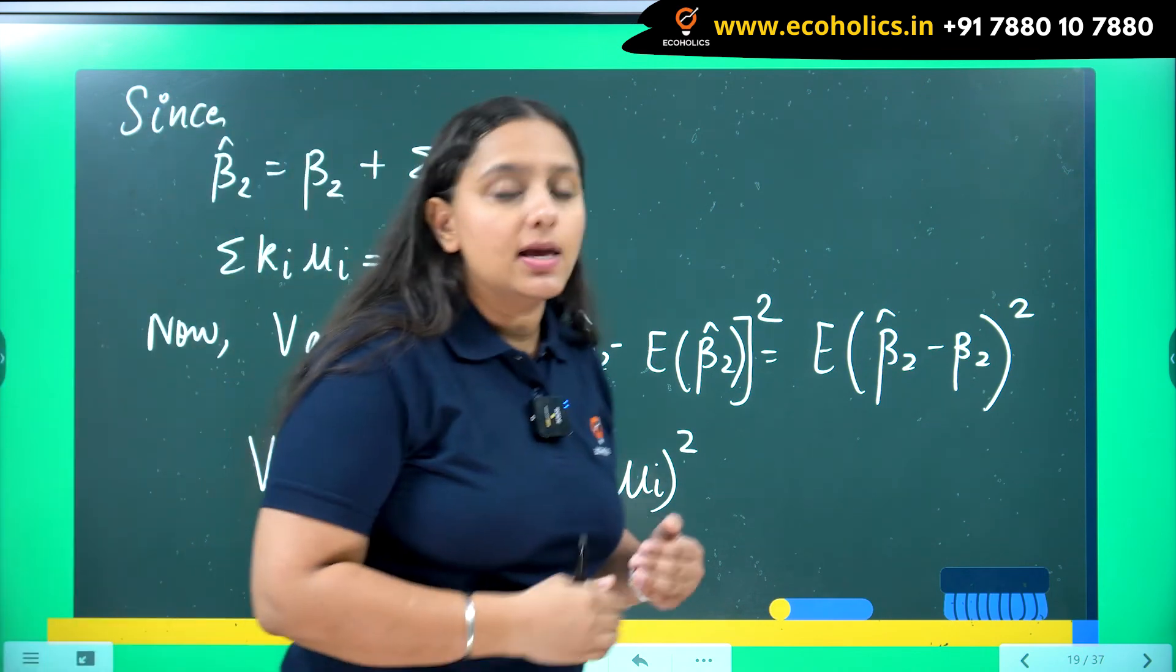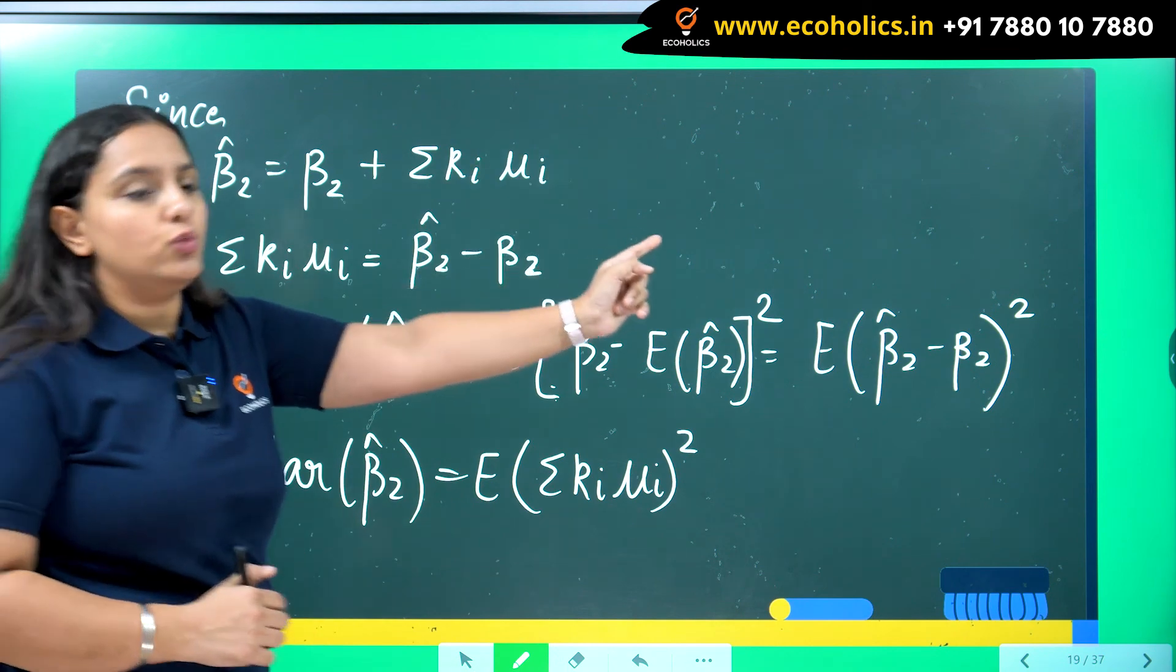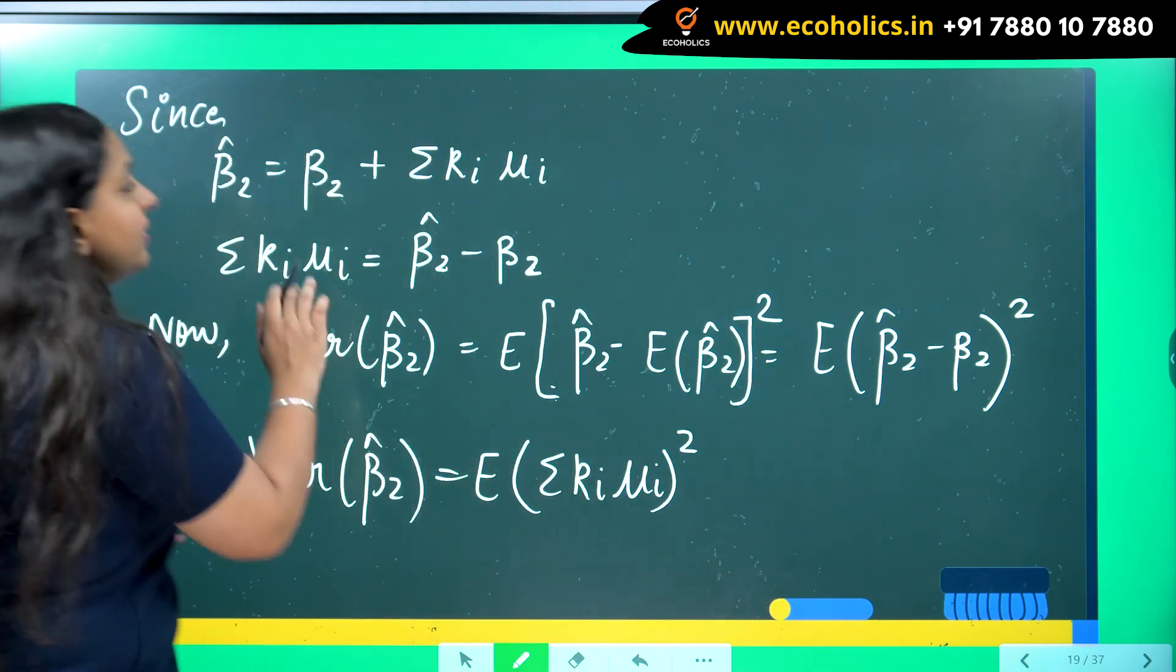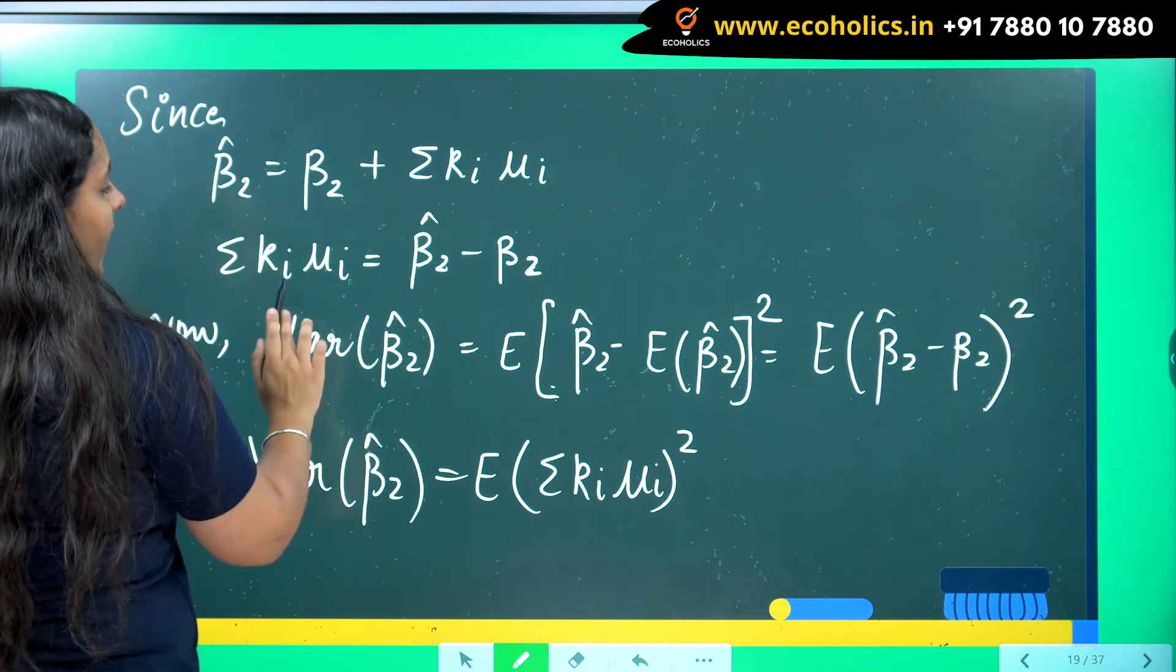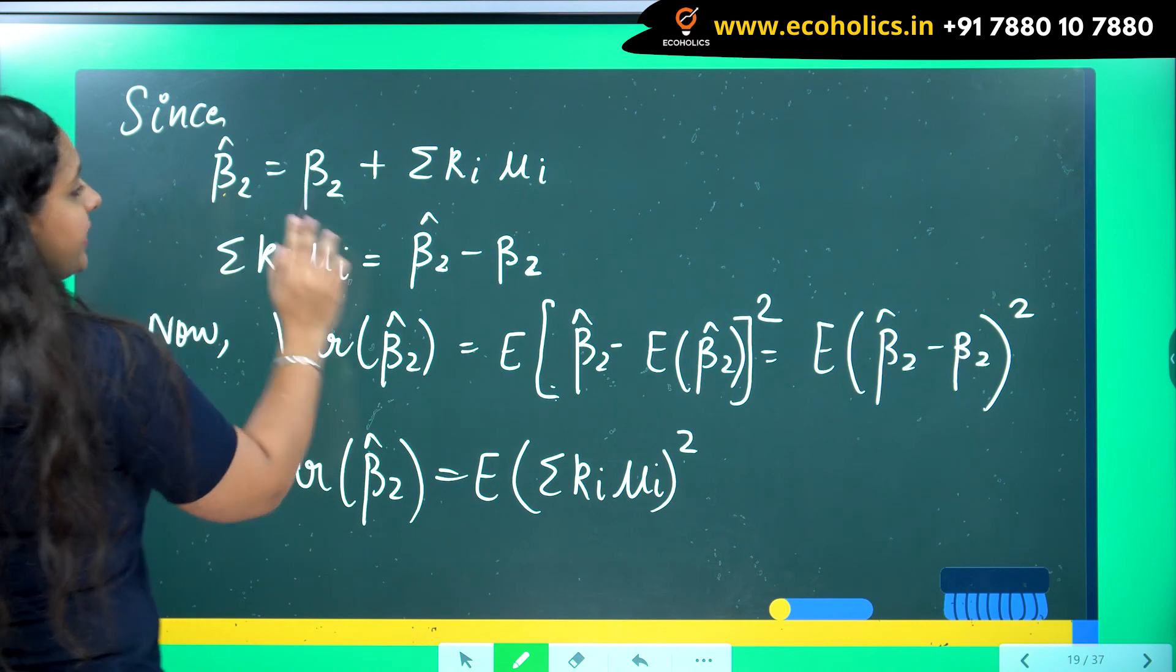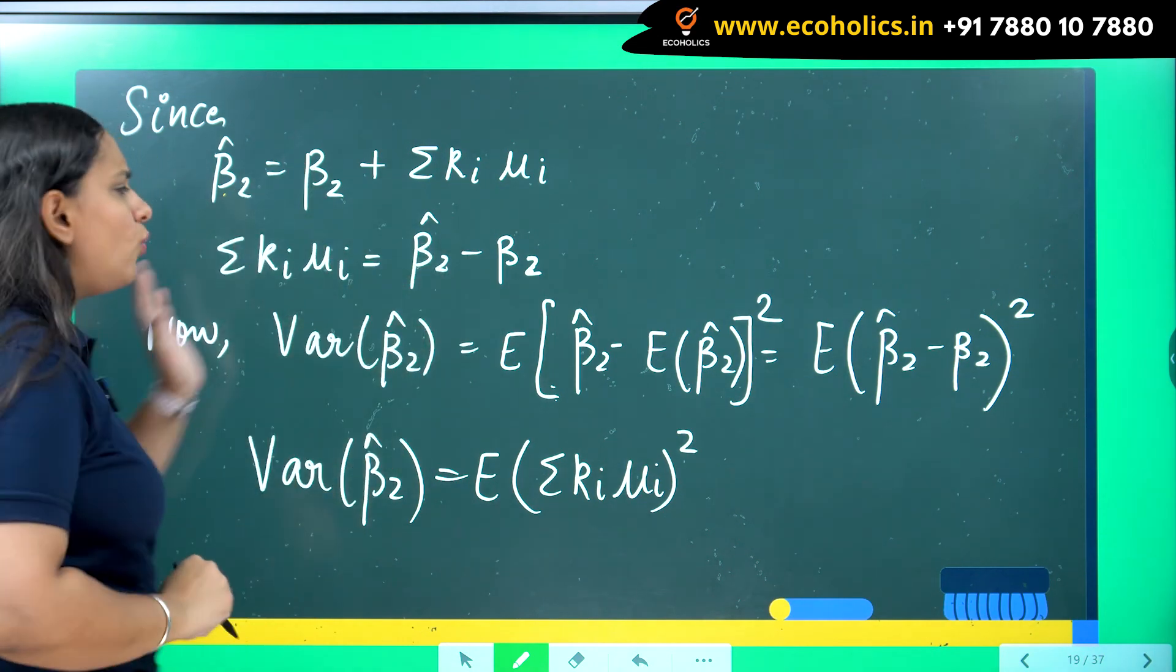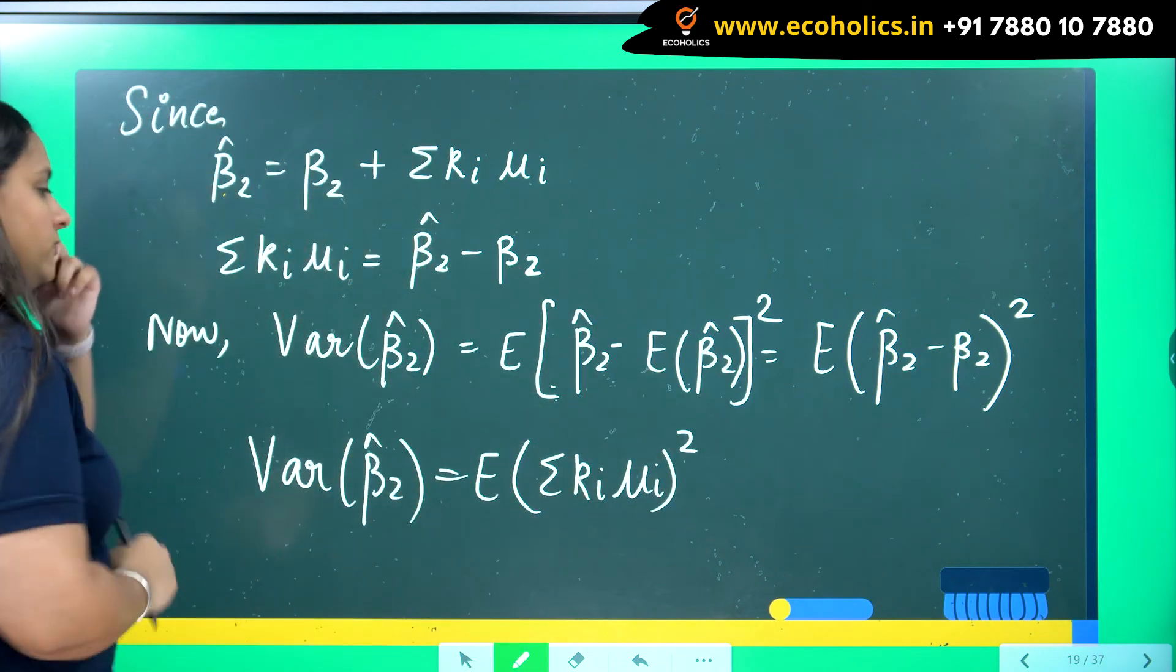The thing is, now I have to find the variance. I told you in that video that these kind of forms for beta 2 are going to be really useful for you. To find the variance, I am writing my summation k i mu i in terms of beta 2 hat and beta 2. So I will take it to the other side, it will get subtracted.